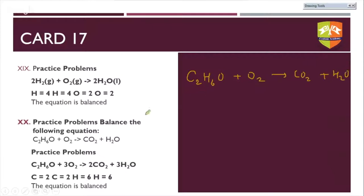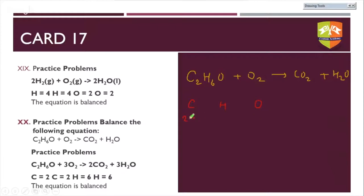For the C₂H₆O balancing: carbon — two reactant, one product; hydrogen — six reactant, two product; oxygen — three reactant, three product. Oxygen seems balanced but there is a large gap in carbon and hydrogen. Since there are six and two hydrogens, multiply H₂O by three — hydrogens immediately balance at six. Oxygen on the product side is now five, but only three on the reactant side.